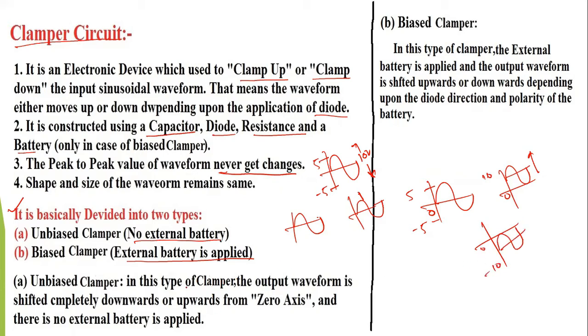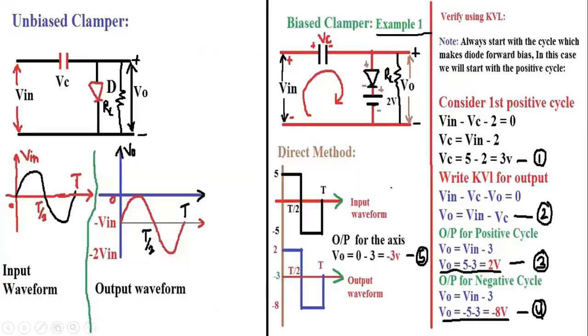In biased clamper, depending upon the diode direction and battery polarity, the waveform will be clamped at a particular DC level either upwards or downwards. For example, if we use 2 volts DC supply, the waveform will either completely shift upward by 2V or below by 2V.